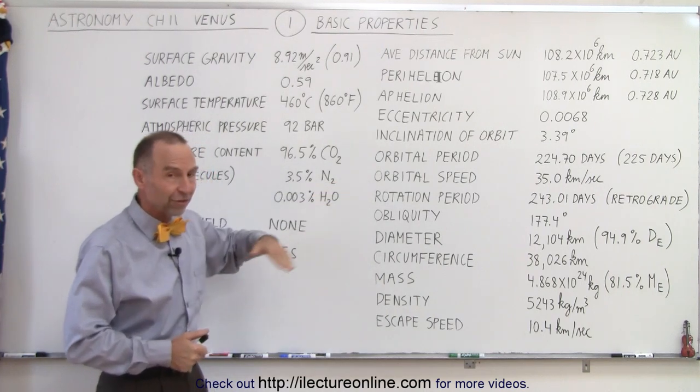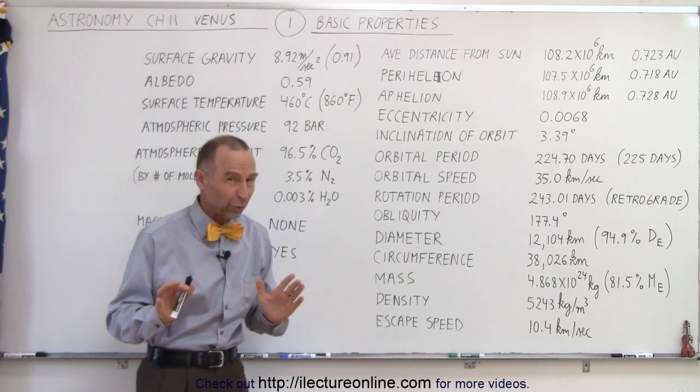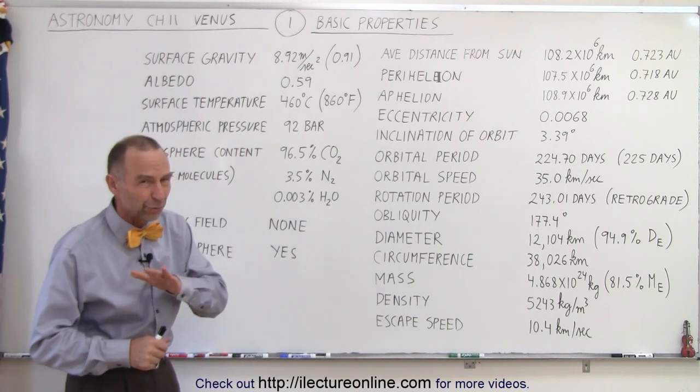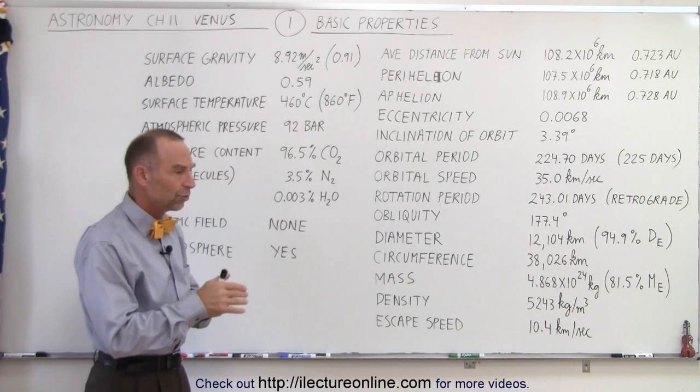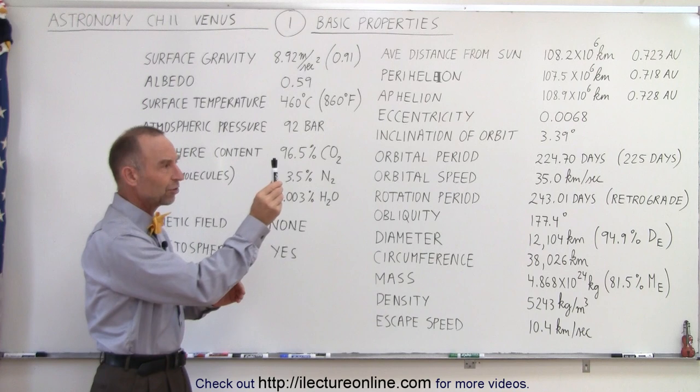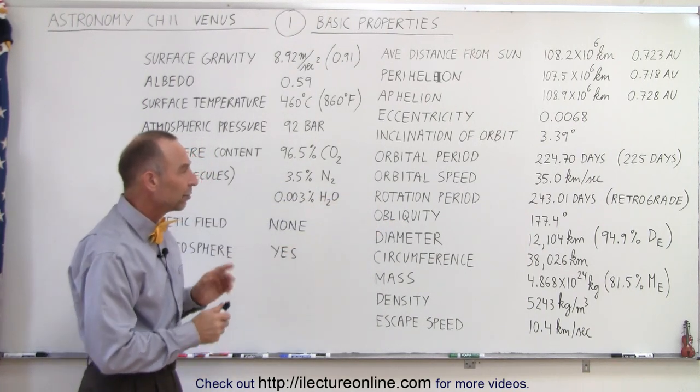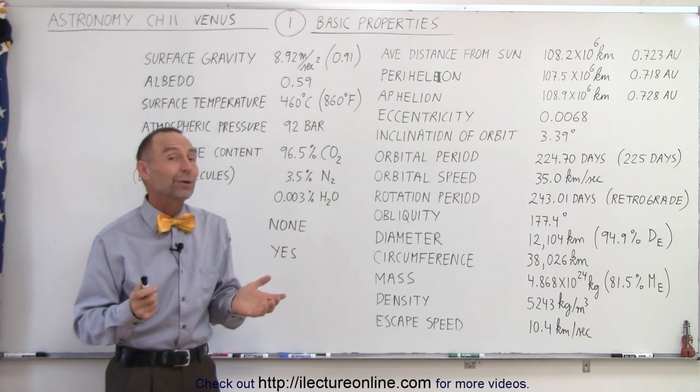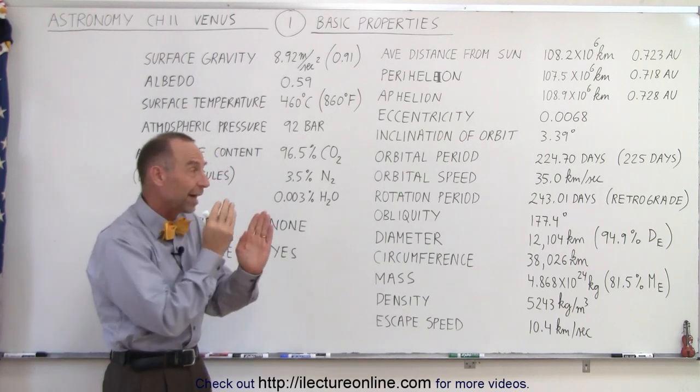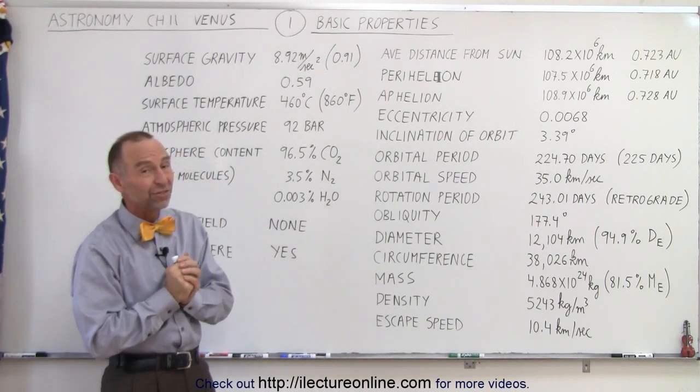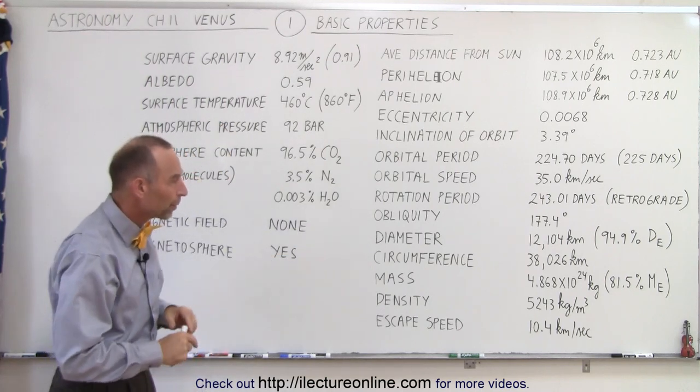The orbital speed, since it's fairly close to the Sun, is a whopping 35 kilometers per second, not quite as fast as Mercury but definitely faster than Earth at about 29 kilometers per second. The obliquity, the orientation of its rotational axis relative to its orbital axis, is 177.4 degrees. Essentially the planet is upside down, not quite perfectly upside down, so there's a difference of about 2.6 degrees.